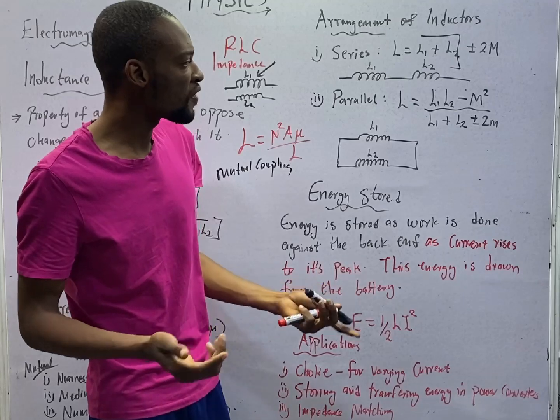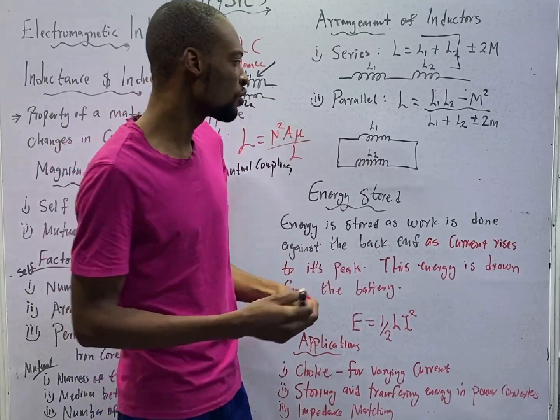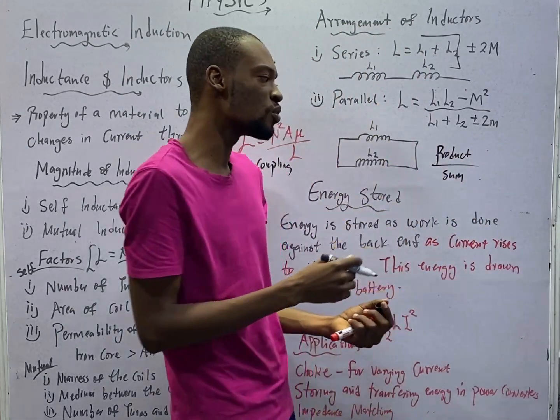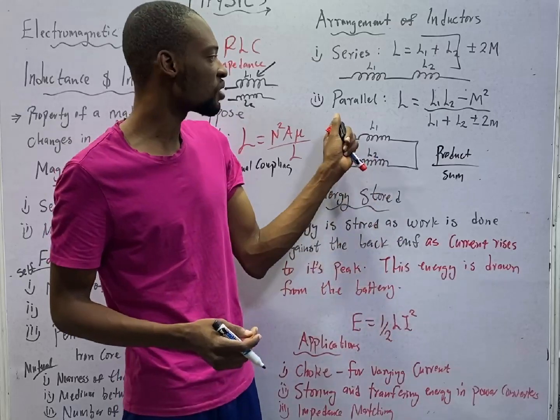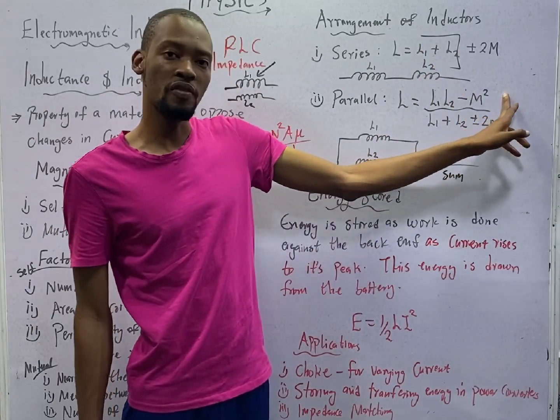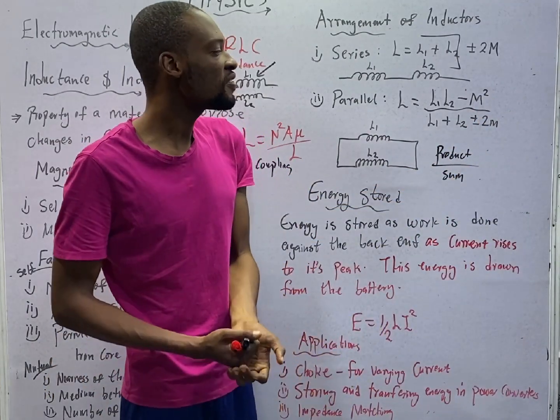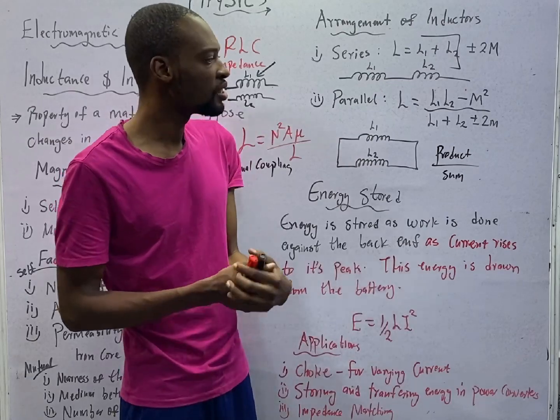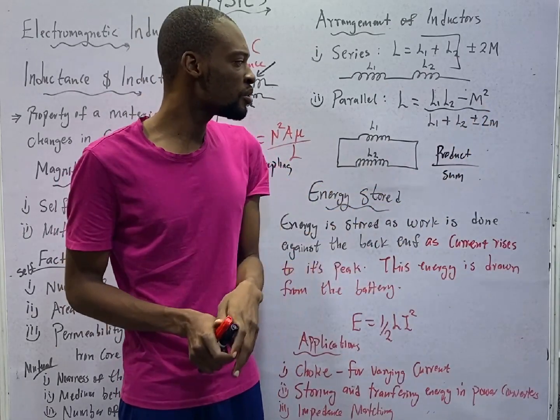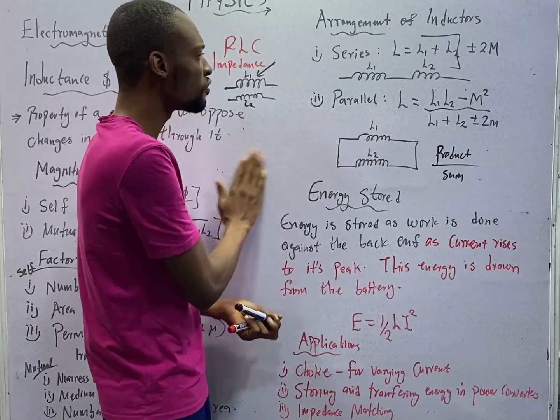Then in parallel, you solve them the way you solve resistors in parallel. If you are given two inductors to resolve in parallel, just look for product over sum. Multiply the two, over add the two. That is your inductor in parallel. L1 times L2, that is product over sum. At the top, you subtract the square of the mutual coupling. At the bottom, plus or minus two times mutual coupling. If they are in the same direction according to the equation, you add. In different directions, you subtract. But for many questions I've seen in JAMB, you need not use mutual coupling. I'm preparing you for the worst, so that something very simple will not make you feel JAMB.